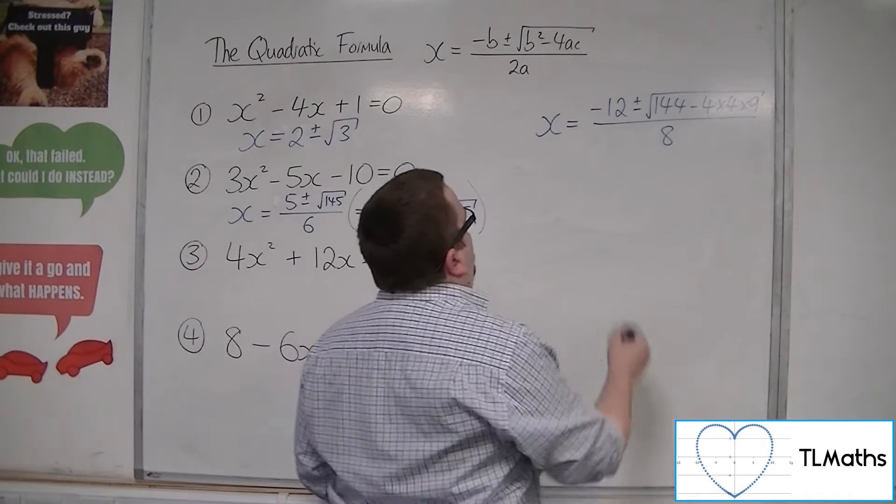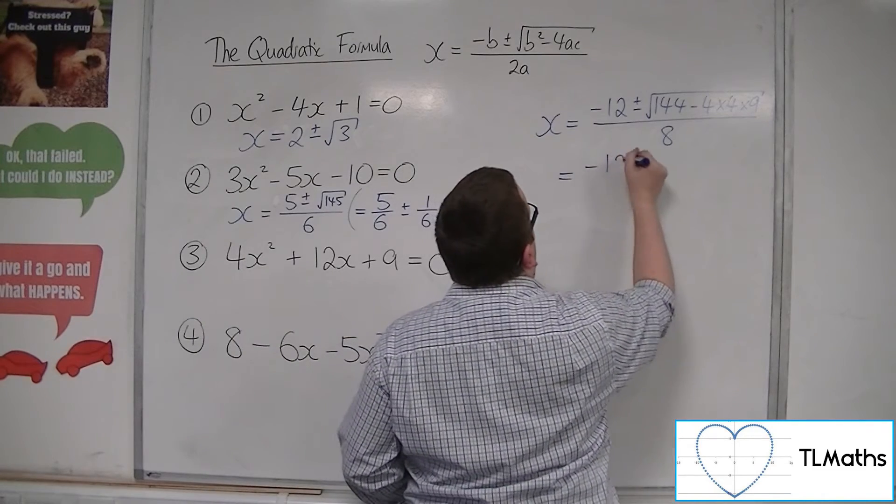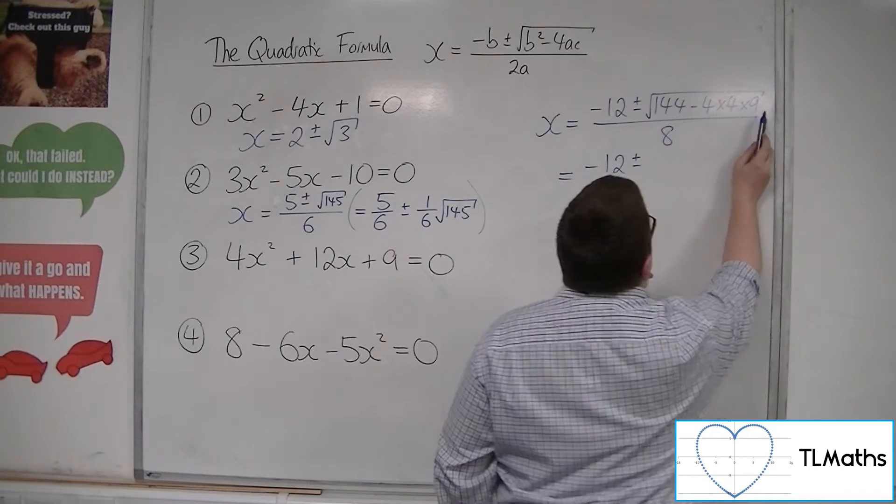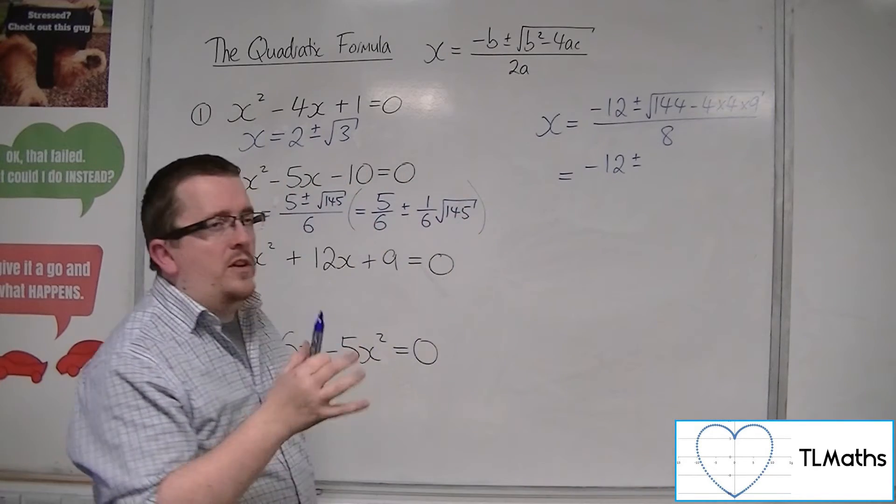So in this case, we have minus 12, plus or minus, now 144, take away 4 times 4 times 9. 4 nines are 36.